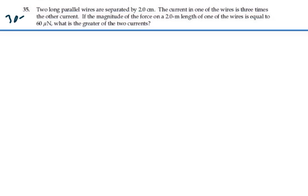This is problem 3035. Two long parallel wires are separated by two centimeters. The current in one of the wires is three times the other current. If the magnitude of the force on the two meter length of one of the wires is equal to 60 micro newtons, what is the greater of the two currents?